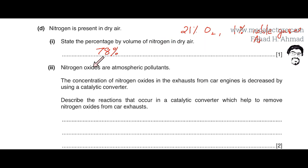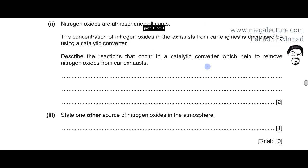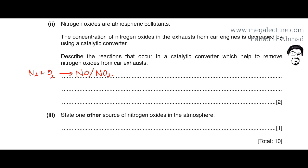Nitrogen oxides are atmospheric pollutants, and their concentration in car engine exhaust is decreased by catalytic converters. We need to describe the reaction in a catalytic converter that removes nitrogen oxides. Nitrogen monoxide (NO) and NO2 are produced in car engines because nitrogen and oxygen in the air react at the high temperatures inside the engine. Carbon monoxide is also produced due to incomplete combustion of fuel, causing breathing problems.